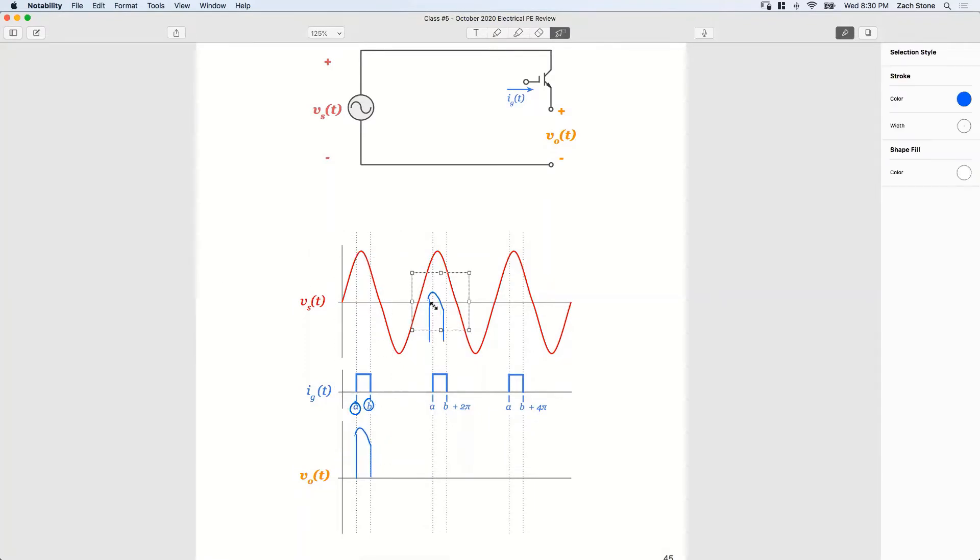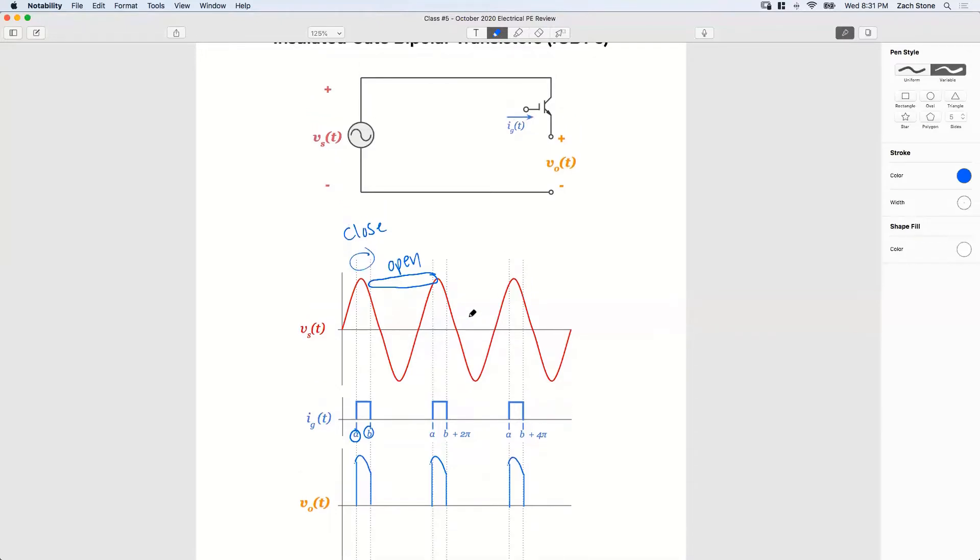So what does an IGBT have in common with the thyristor? How do we close the IGBT? By firing the gate, right? The firing angle, alpha. But what's different? How do we open the IGBT? By turning the gate current off. See that? It's just one more aspect of control.